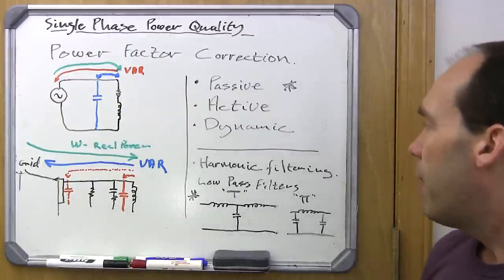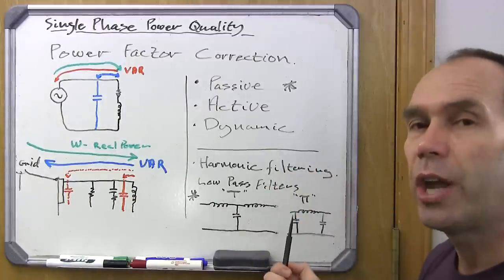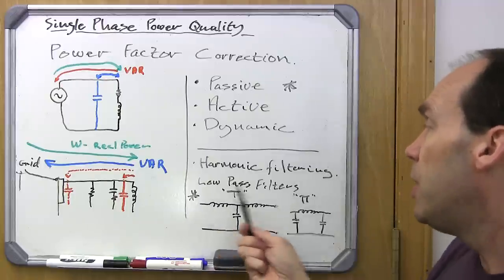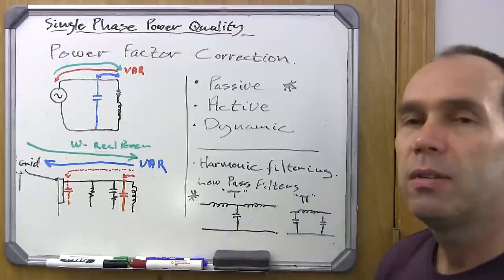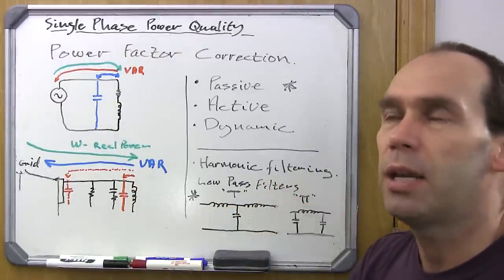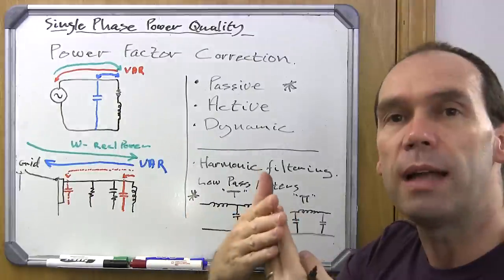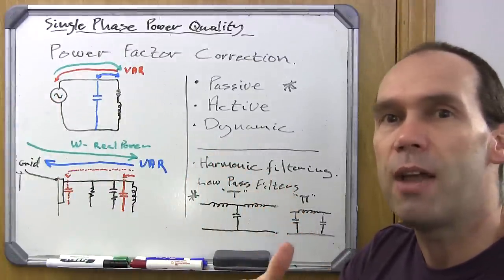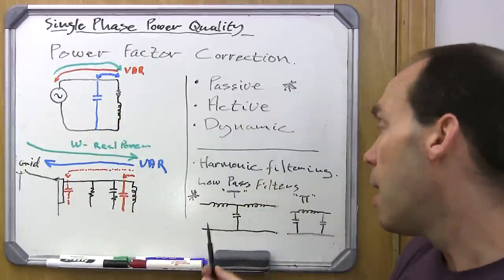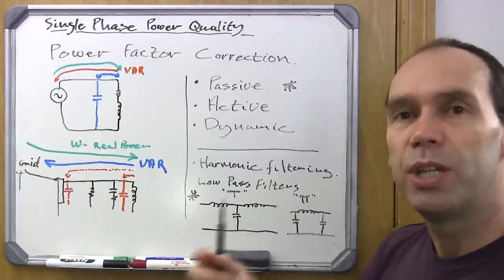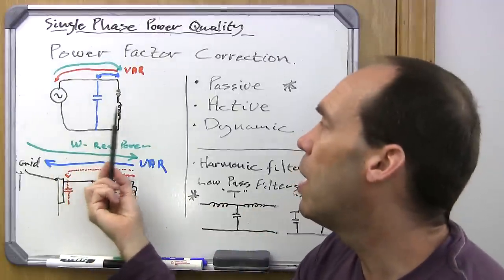Regarding harmonic filtering, this passive example isn't going to change — you set it up for a certain amount of harmonics. These are low-pass filters: you get T filters and pi-shaped filters, which are set to allow lower frequencies through. If you've got 60 Hz mains, your harmonics are multiples of that and are higher. Put in a low-pass filter allowing everything below 100 Hz to pass, and you'll start filtering out your second, third, fourth, and fifth harmonics. You do also get dynamic filtering that adjusts for various frequency requirements.